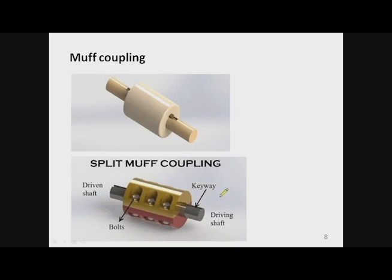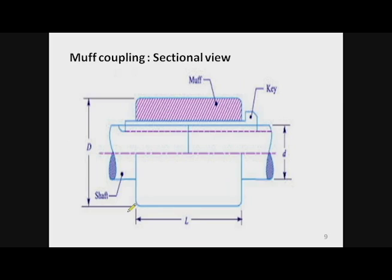This is another version of muff coupling where the muff is made in two halves — you can see the upper half and lower half here in different colors. These two halves are joined with the help of nuts and bolts. This split muff coupling is used when the machines to be joined are very heavy.